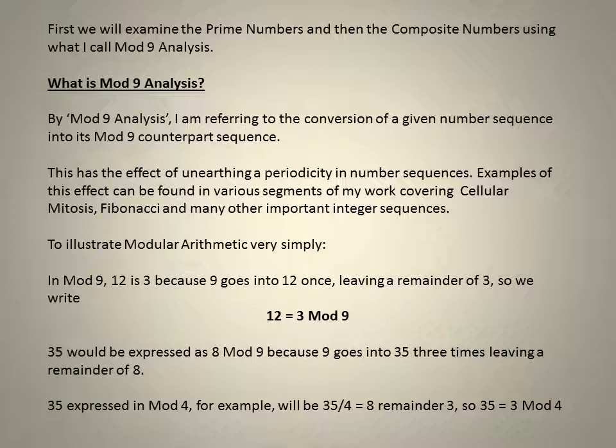In mod 9, 12 is 3 because 9 goes into 12 once. So we write 12 equals 3. 35, for example, would be expressed as 8 mod 9 because 9 goes into 35. 35 expressed in mod 4, for example, equals 8 remainder 3. So 35 equals 3 mod 4.